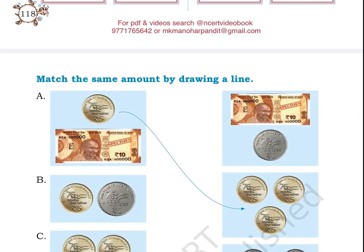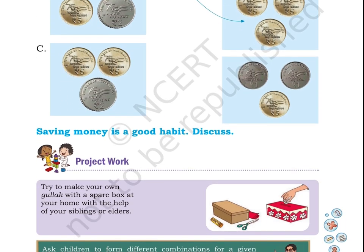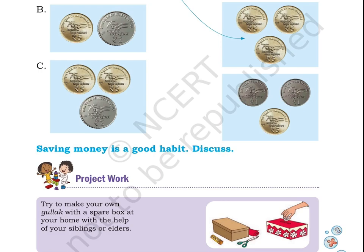Page number 119: Match the same amount by drawing a line. Here in this picture, on the left hand side a coin and a note is given. A: On the left side, first we have a coin of 5 rupees along with a note of 10 rupees. B: We have 2 coins — one of 5 rupees, another of 2 rupees. C: We have 2 coins of 5 rupees each along with a 2 rupee coin. On the right hand side, we have a 10 rupee note along with a 2 rupee coin; after that, 3 coins of 5 rupees each; after that, 2 coins of 1 rupee each along with a 5 rupee coin. The first item in the left column making 15 rupees has been matched to 3 coins of 5 rupees each in the right column.